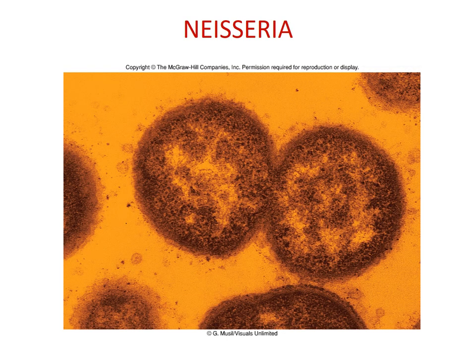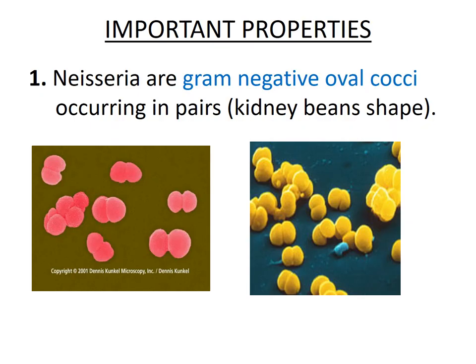Our main focus is Neisseria, and this is how this bacteria looks like. You can appreciate that it is a cocci. Neisseria are gram-negative oval cocci that occur in pairs. From the picture on the left you can see the diplococci, which are oval in shape. Under gram staining in a light microscope, you will see the gram-negative oval cocci appearance and can still appreciate the diplococci.